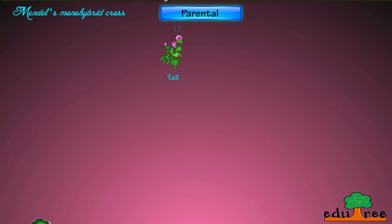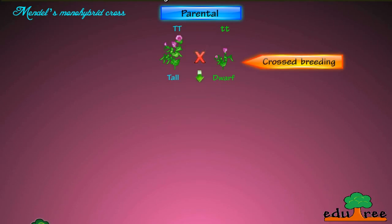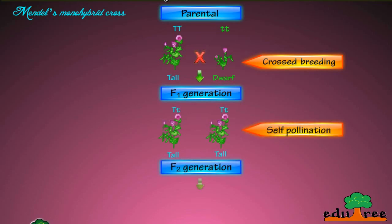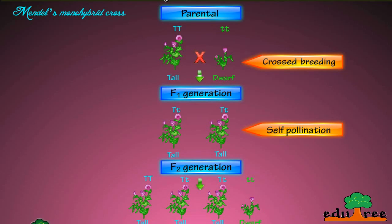Let's take a look at the diagrammatic representation of the monohybrid cross. Mendel took one tall and one dwarf pea plant for cross breeding. He found the child plants were tall, and considered these as first filial generation plants. Then he used a tall plant from the first filial generation to self-pollinate, and found that both tall and dwarf plants appeared in the ratio of 3 to 1 — these he called second filial generation plants. Gregor Johann Mendel worked out the first ever scientific experimental study on heredity, and is called the father of genetics.